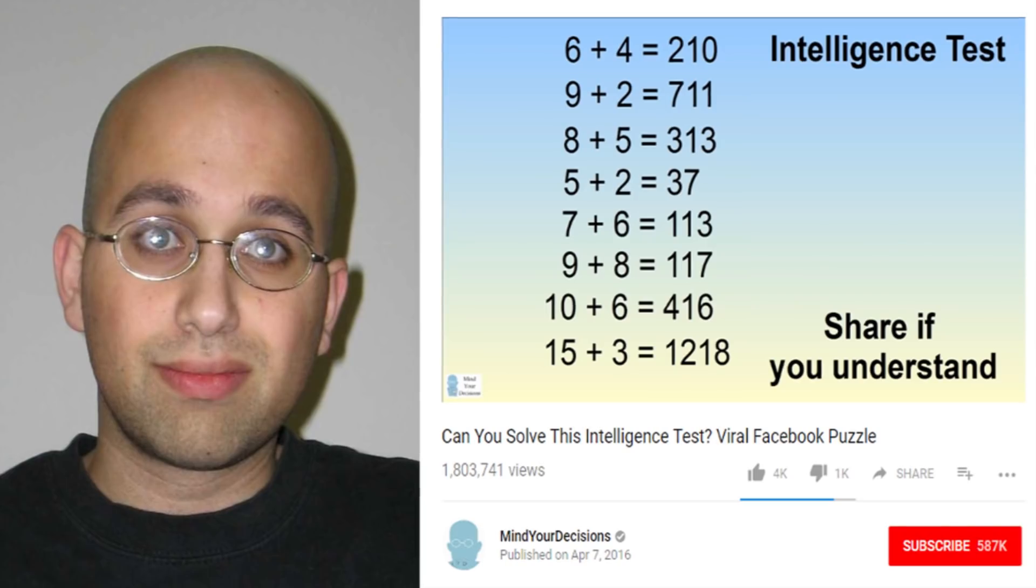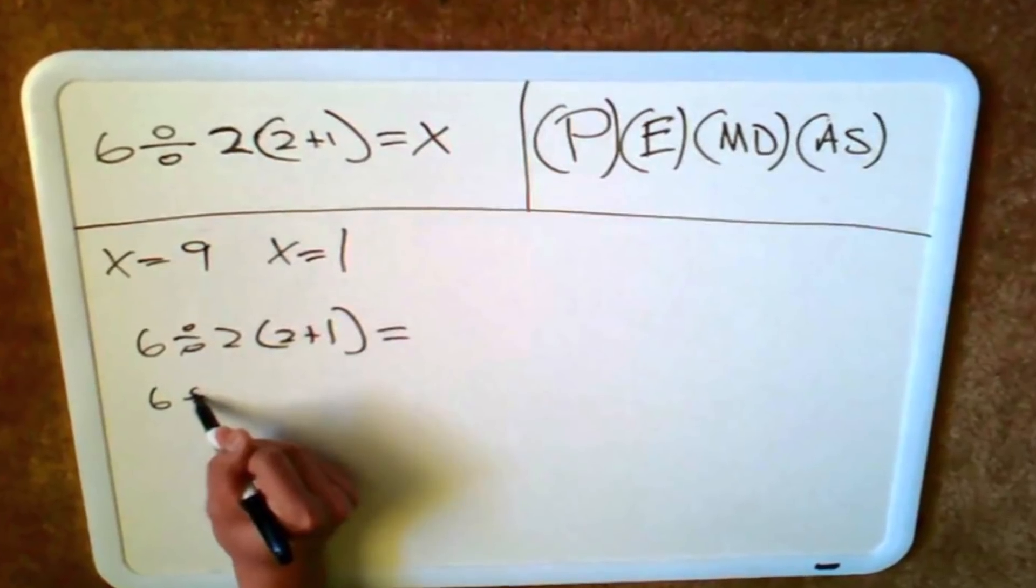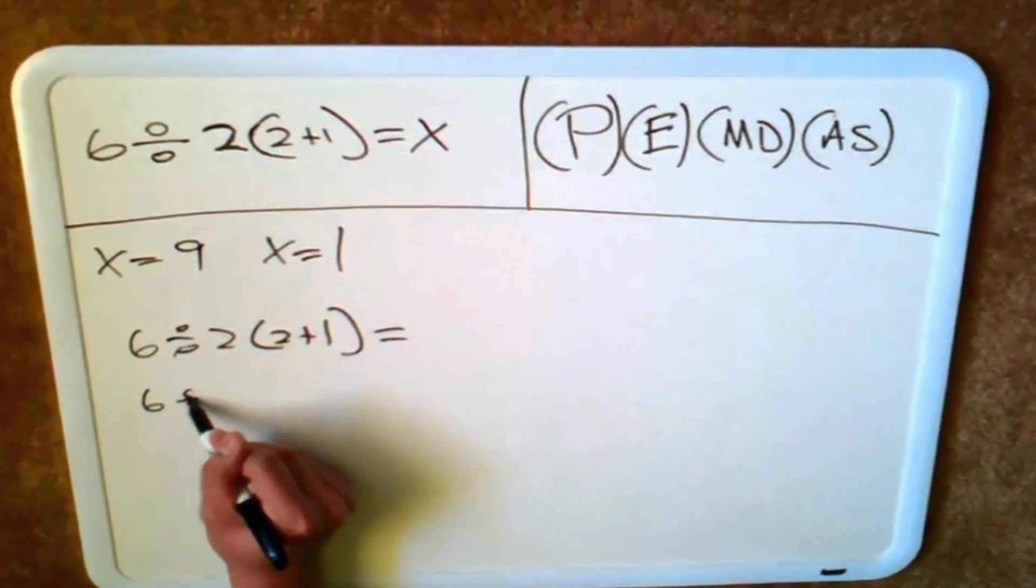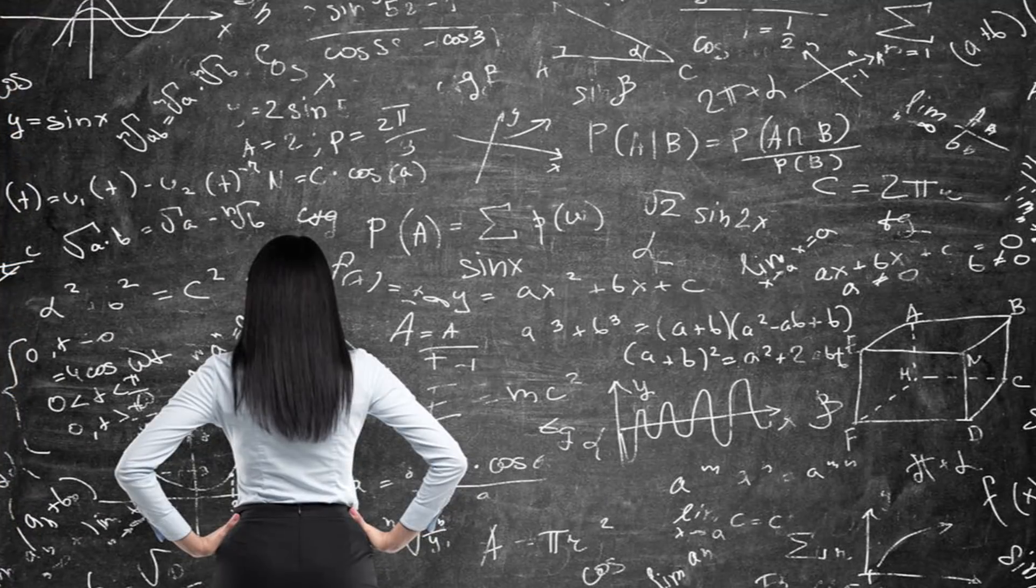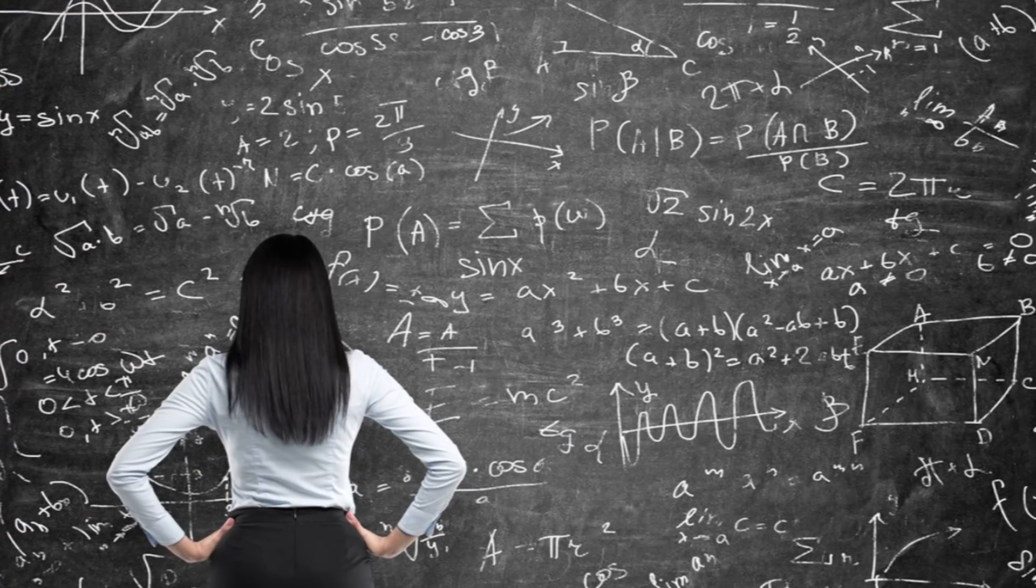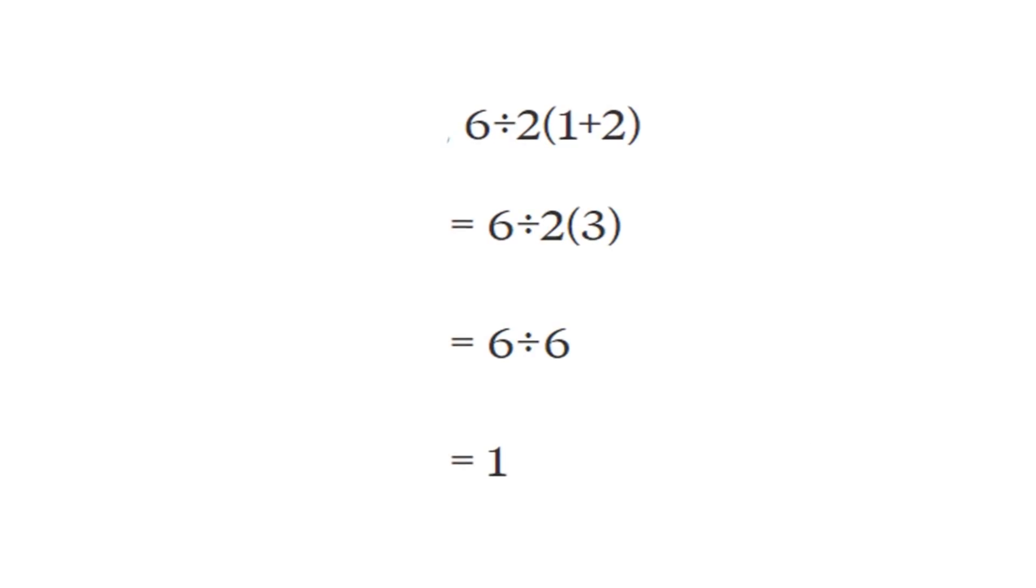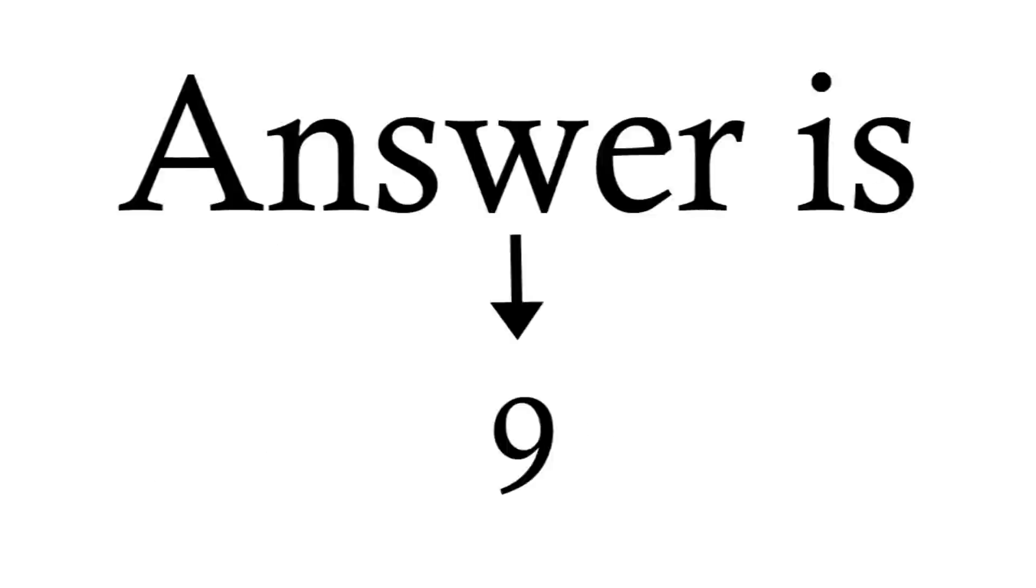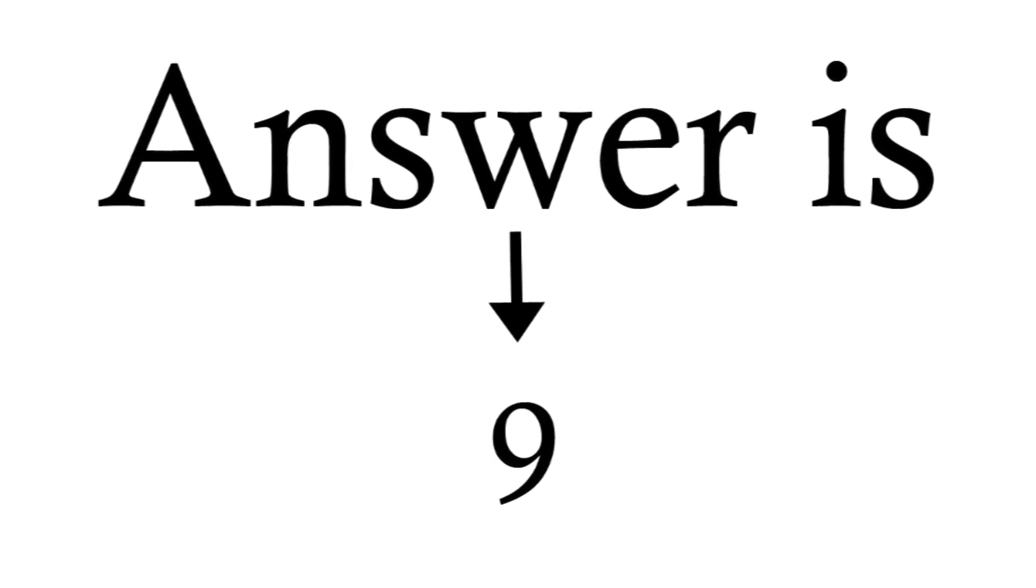Presh Talwalkar is the creator of a YouTube channel called Mind Your Decisions. He's responsible for this math problem and then posting an explanation regarding why so many people don't get the answer correct. According to Talwalkar, there is an old way to solve math problems and a new way. If you use the old method to solve the problem, you'll come up with an answer of 1. If you use the modern way of figuring out the problem, you'll come up with 9, which is the correct answer.